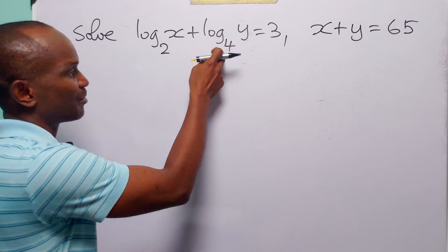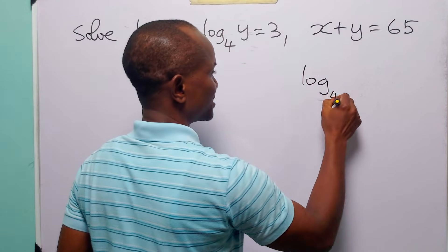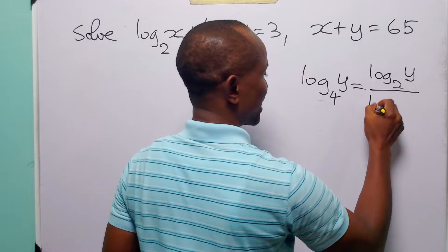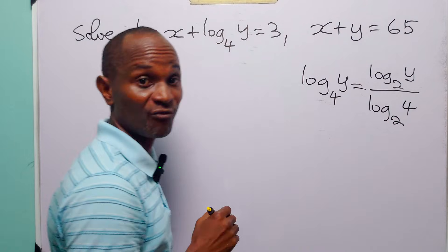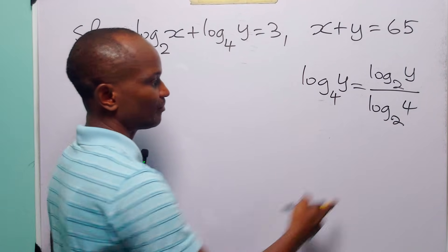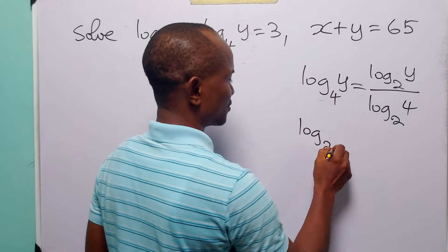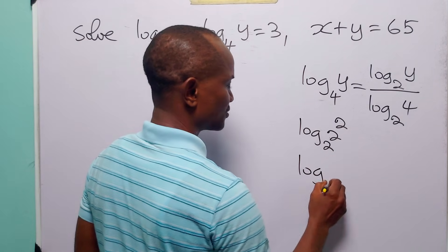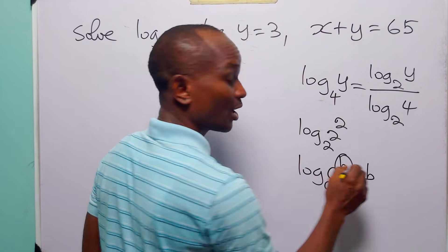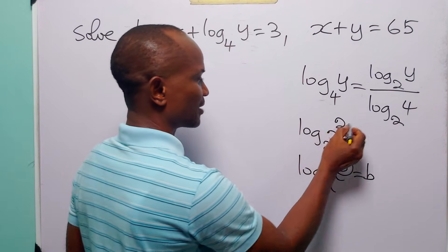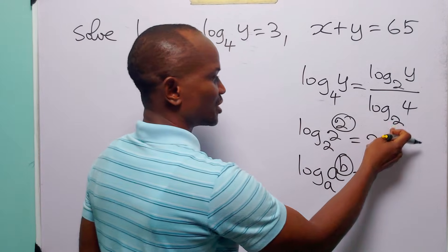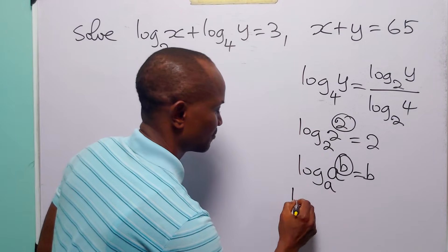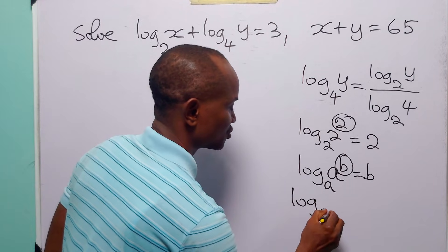When we apply the change of base formula to this term, we have that log to base 4 of y is equal to log to base 2 of y divided by log to base 2 of the old base, which is 4. Now the denominator can be written as log to base 2 of 2 squared. Remember that log to base a of a to power b is equal to b, so log to base 2 of 2 squared is equal to 2. Therefore log to base 4 of y is the same as log to base 2 of y divided by 2, which is one half log to base 2 of y.